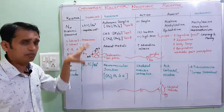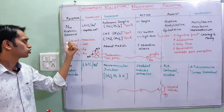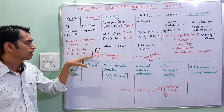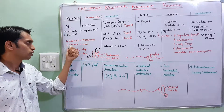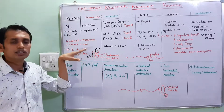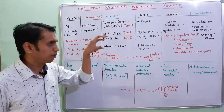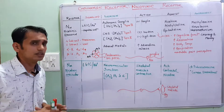Structurally, the nicotinic receptor is a transmembrane protein. The subunits are transmembrane proteins embedded in the cell membrane. This is the main structural feature of nicotinic receptors.